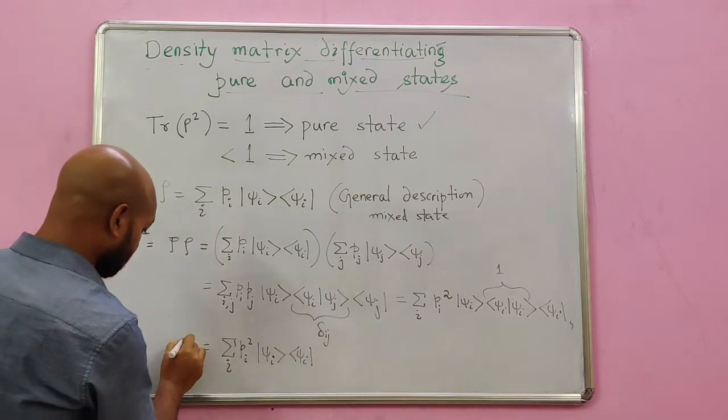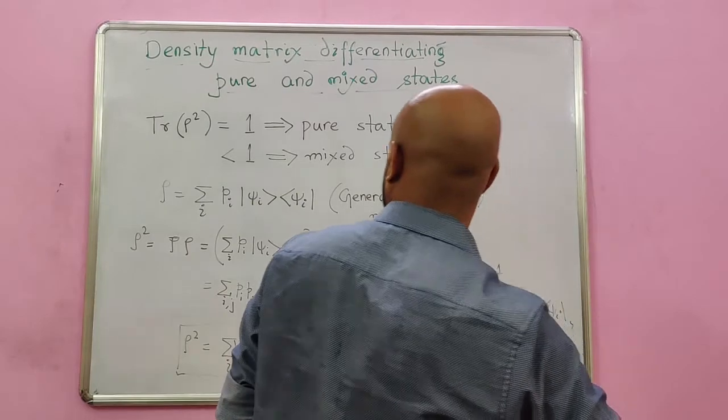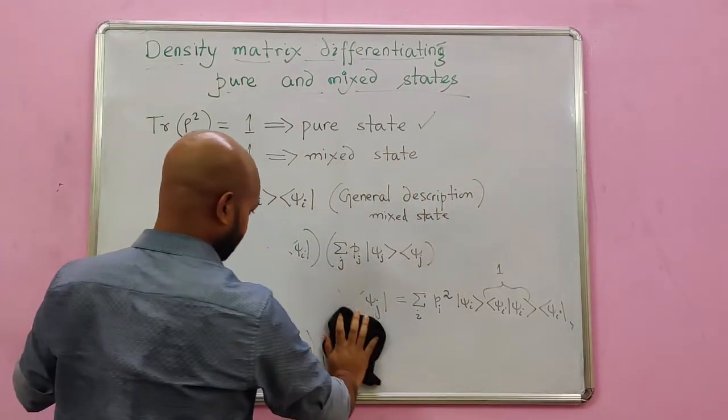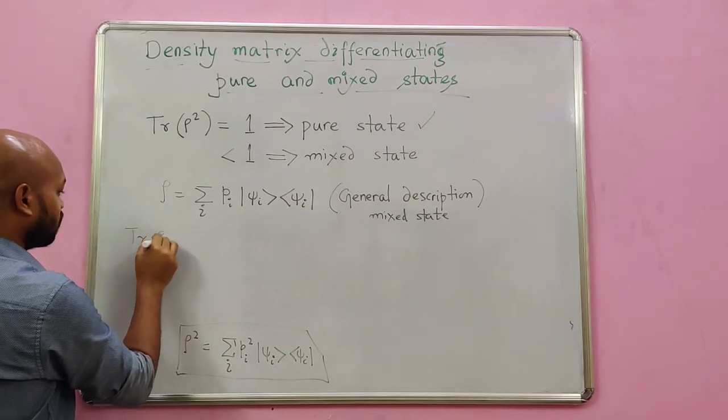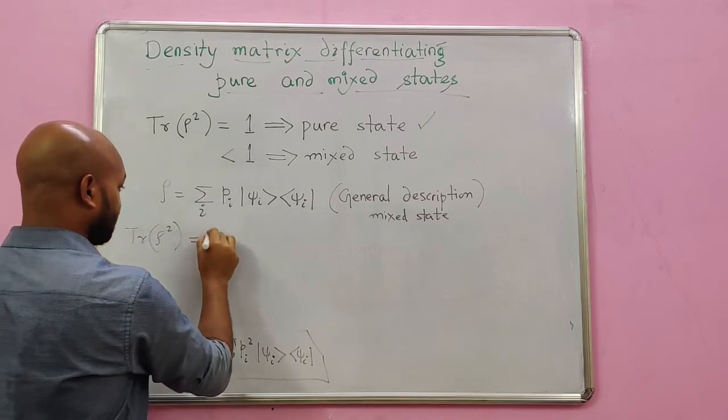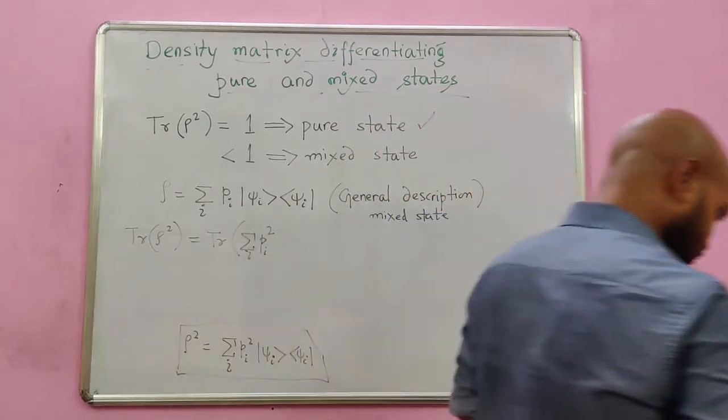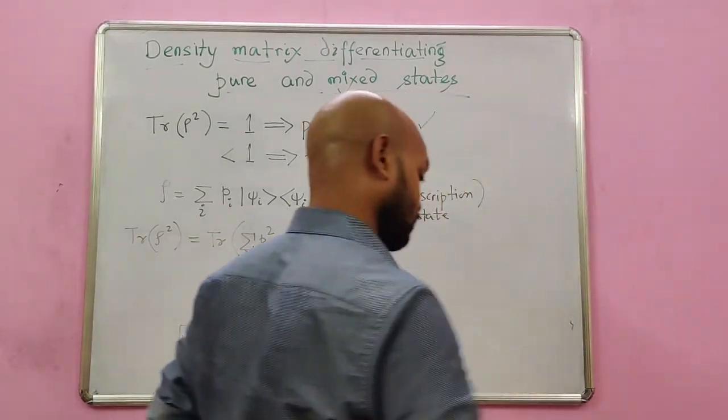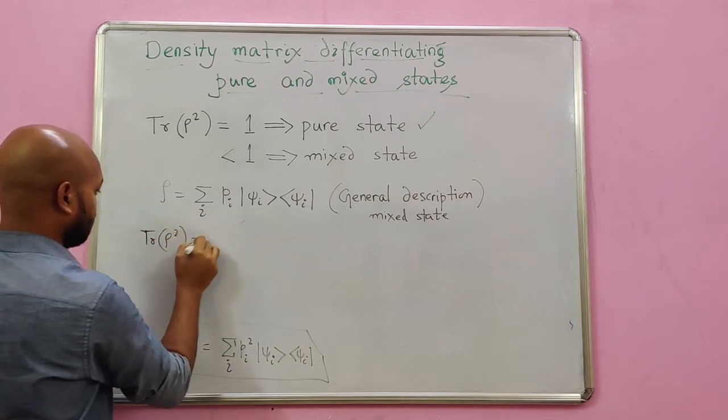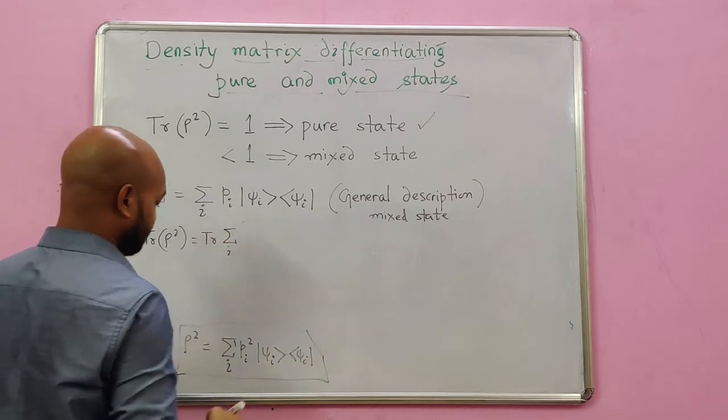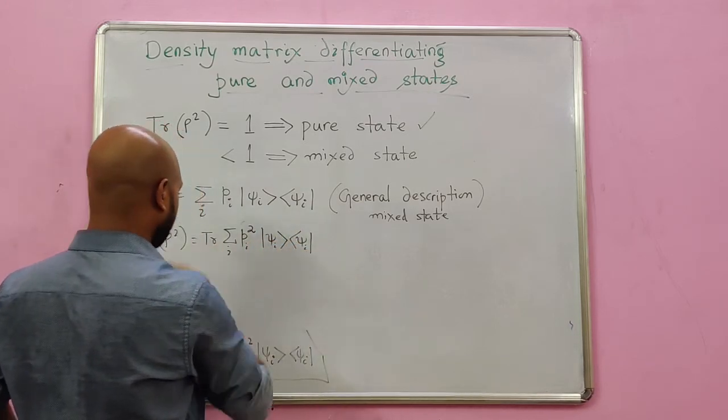So ultimately reach, psi i, and pi squared, psi i, psi i. This is the rho squared. So far so good. Then we take the trace of it, trace of rho squared. When I do the trace of rho squared, I take the trace of this particular sum: summation i, pi squared, psi i, psi i.